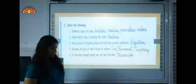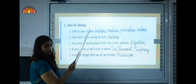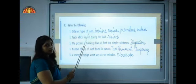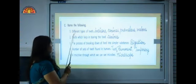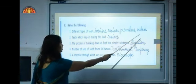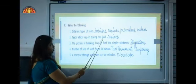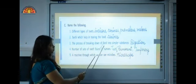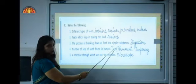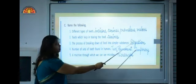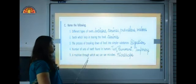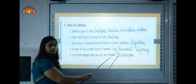Now we move to the next exercise. Name the following. You have to write the names over here in good handwriting and with correct spellings. First, different types of teeth. They are incisors, canines, premolars and molars. Teeth which help in tearing the food: canines. The process of breaking down of food into simpler substances: digestion. Number of sets of teeth found in humans: two, and they are permanent and temporary. Put a comma over here and then write permanent and temporary. A machine through which we can see microbes. So the correct answer is microscope.